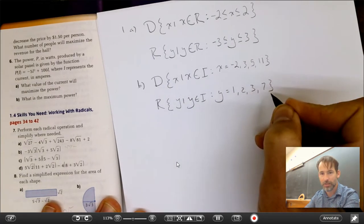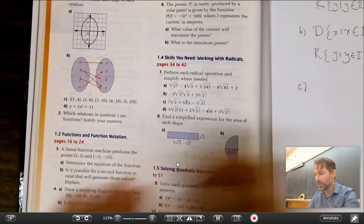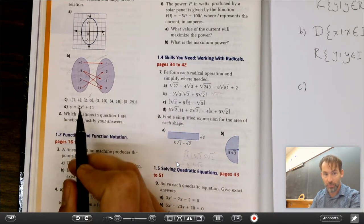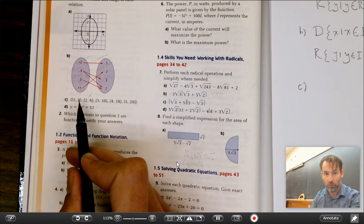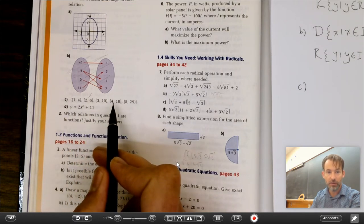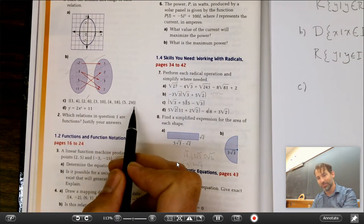Now, c: let's take a look. c is a set of ordered pairs and it works just like a mapping diagram. This tells me if I input one I output four, if I input two I output six, if I input three I output 10, if I input four I output 18, and if I input five I output 29.